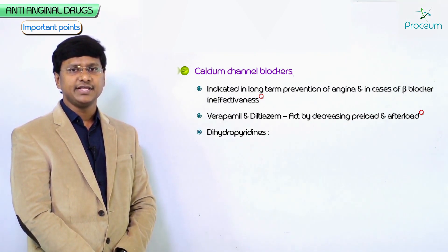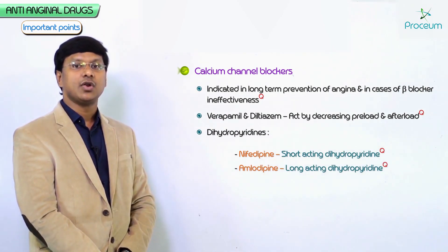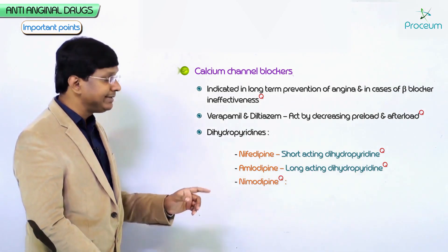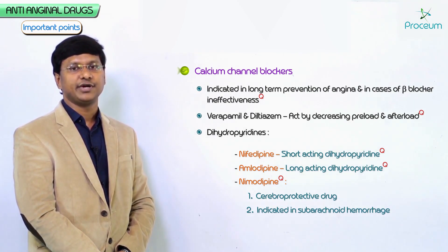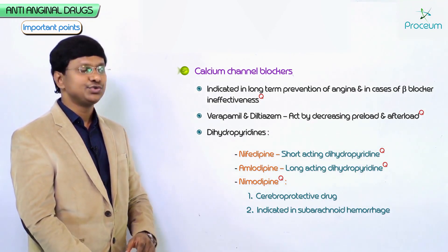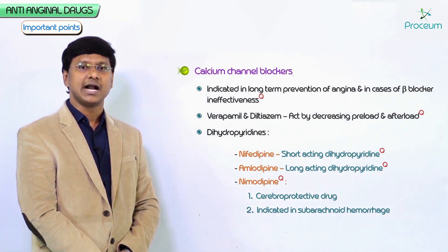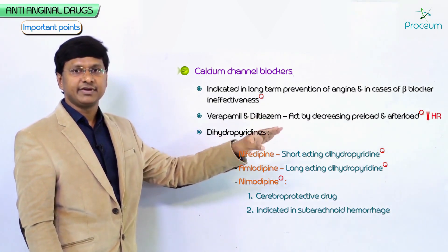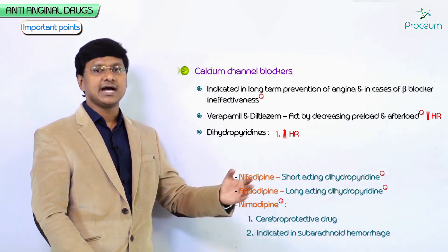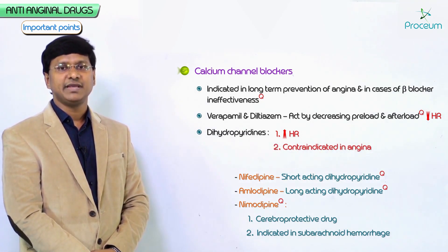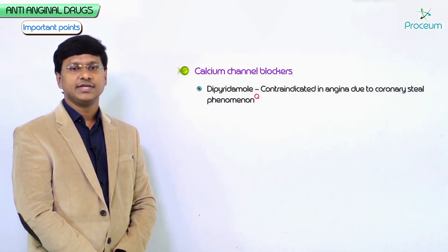Among dihydropyridines, nifedipine is short-acting while amlodipine is long-acting. Nimodipine is a cerebro-protective drug used in subarachnoid hemorrhage — a very important MCQ point. Regarding heart rate effects: verapamil and diltiazem reduce heart rate and are used in angina, whereas dihydropyridines like nifedipine increase heart rate and should not be given in angina as they cause reflex tachycardia.